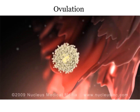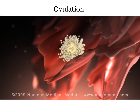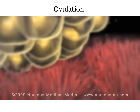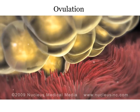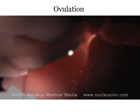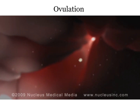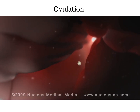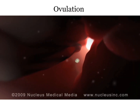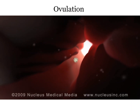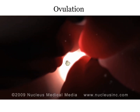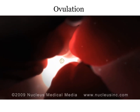In response, the fimbriae — tiny projections at the end of the fallopian tube — sweep across the ovulation site and pick up the egg. Microscopic cilia on the fimbriae's surface transport the egg to the entrance of the fallopian tube. Inside the walls of the fallopian tube, muscular contractions gently push the egg towards the uterus. After ovulation, the egg lives for 12 to 24 hours, so it must be fertilized by a sperm during this time for a woman to become pregnant. If it's not fertilized, the egg dissolves away and is shed along with the uterine lining during menstruation.